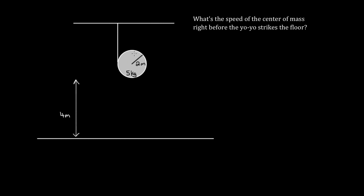We can use our previous derivation: the speed of the center of mass of this cylinder must equal the radius times the angular speed, since the center of mass moves down a distance equal to the arc length traced out by the outside edge. But this alone doesn't let us solve, because we don't know v or omega. We need another equation — and that idea is conservation of energy.